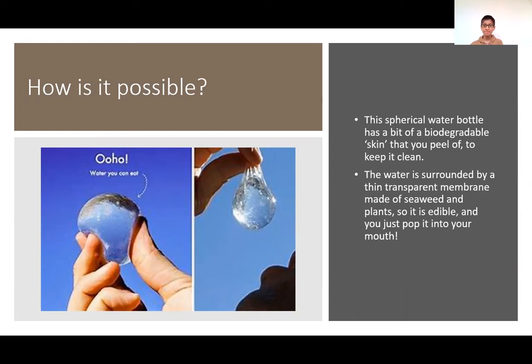And when you want to eat it, once you peel off the skin, you just put it in your mouth and it won't fall apart. The water won't fall apart when you take off the skin because it's surrounded by a little transparent membrane made of seaweed and plants called OHO. So it's edible and you just put it in your mouth.